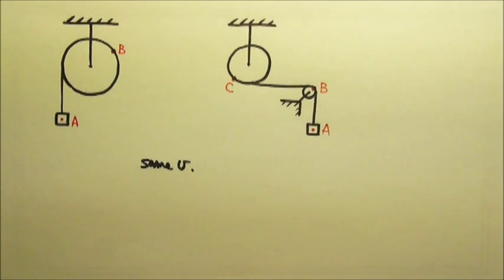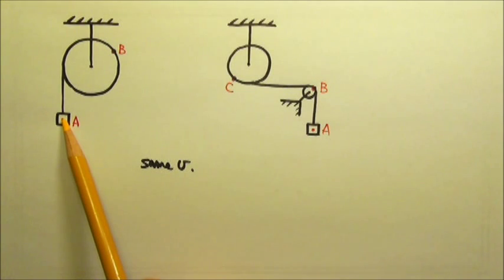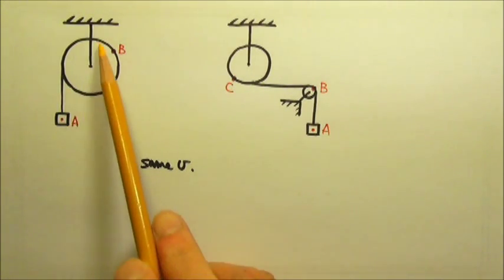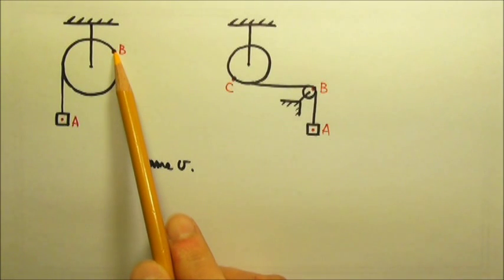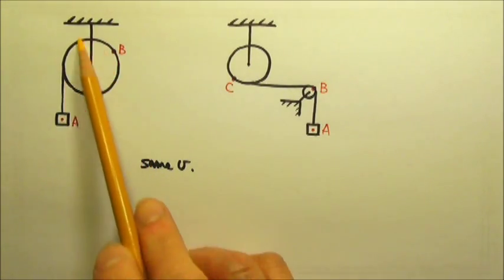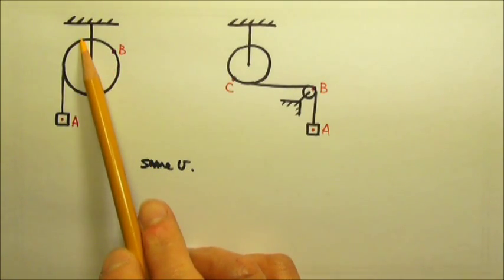They have the same linear speed. Because when this box goes down by one meter, this string goes around one meter, making the point on the rim where the string goes around move by one meter as well.